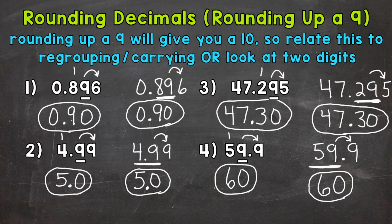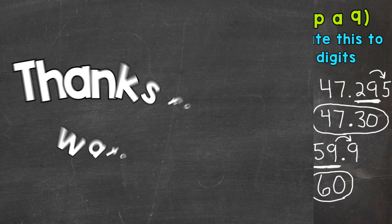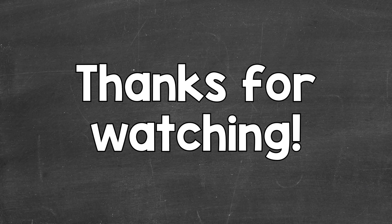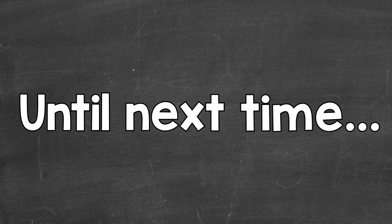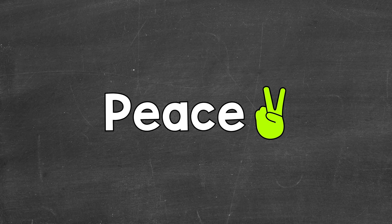So there you have it — that's how you round decimals, specifically rounding up 9's. I hope that helped. Thanks so much for watching. Until next time, peace.